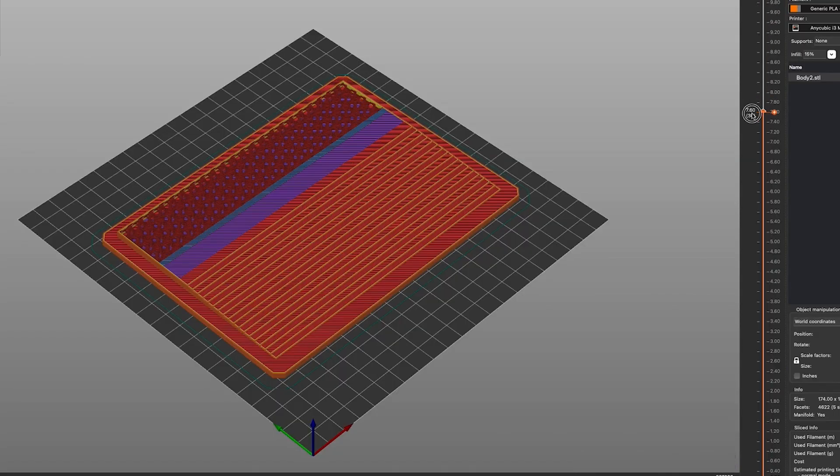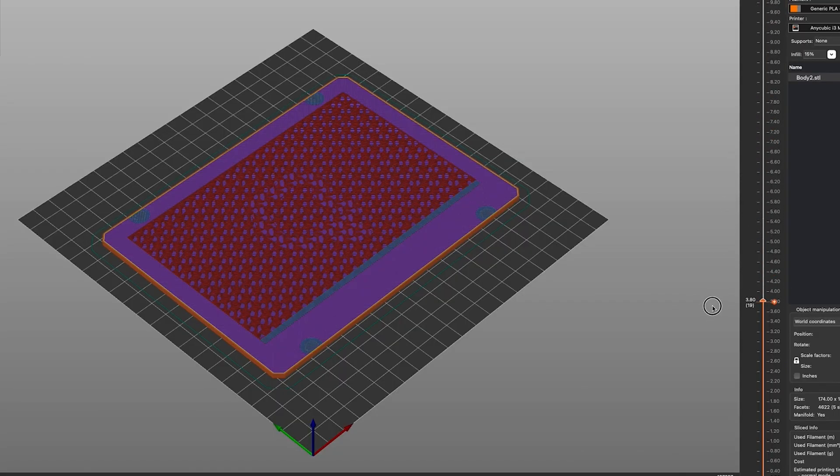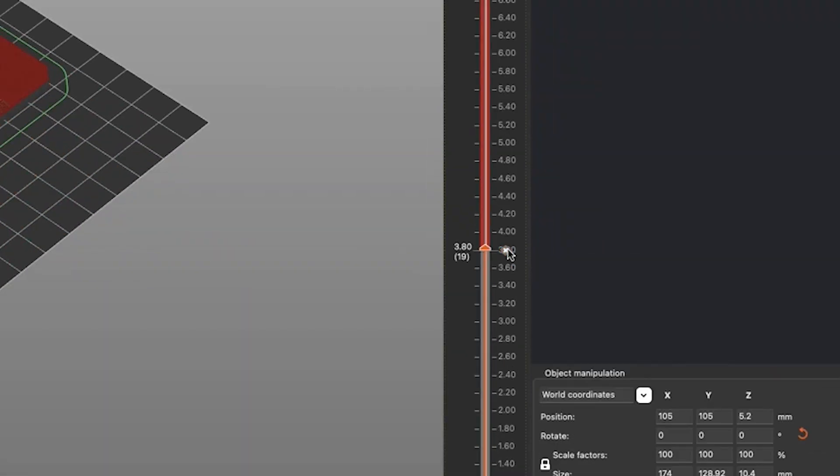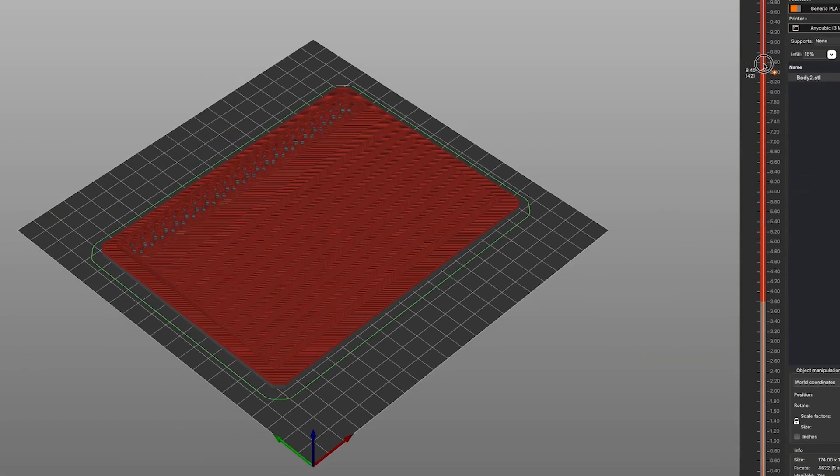This isn't that hard to do in PrusaSlicer, but it's worth mentioning that not all printers respond to the filament color change command in the same way. But if your printer can handle it, captive nuts and magnets can be a nice clean way to join two parts together.